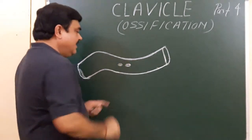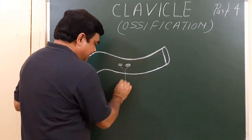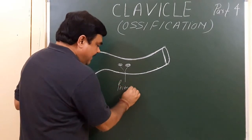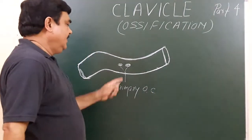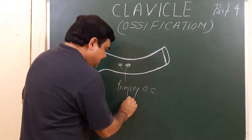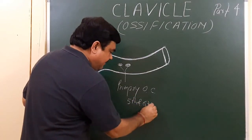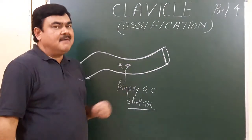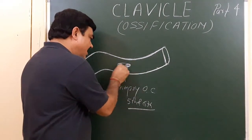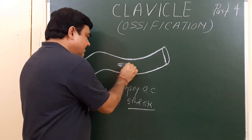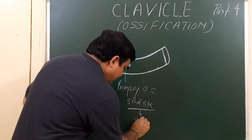These two primary ossification centers appear during the fifth and sixth week of intrauterine life. These two centers fuse to form a single center and become one during the forty-fifth day of intrauterine life.